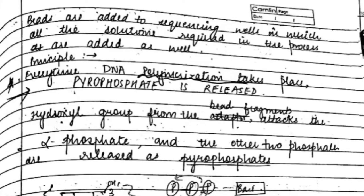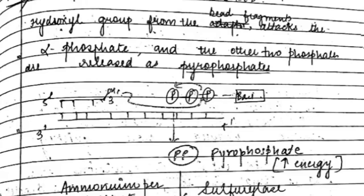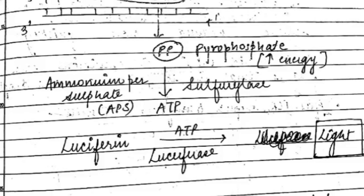The next slide shows in detail how the pyrophosphate is being released — do draw this diagram. Luciferin, in the presence of ATP and luciferase, gets converted into light.